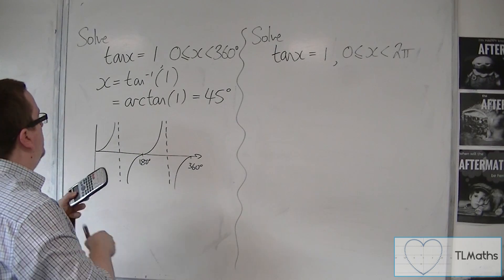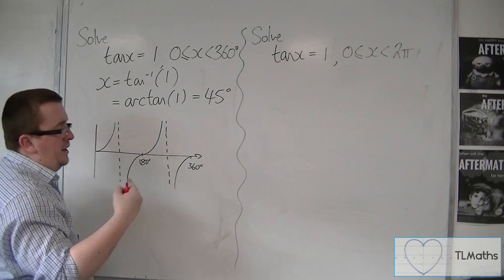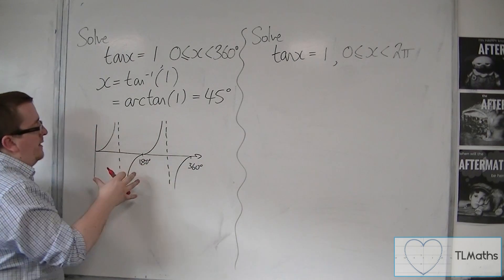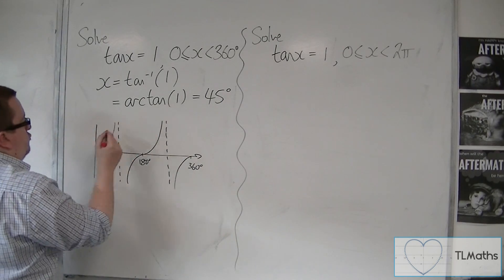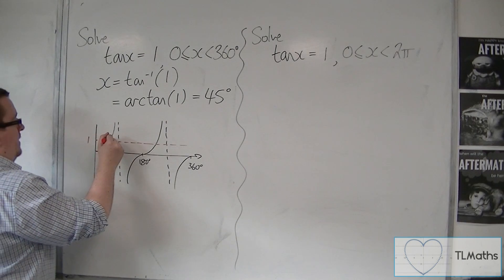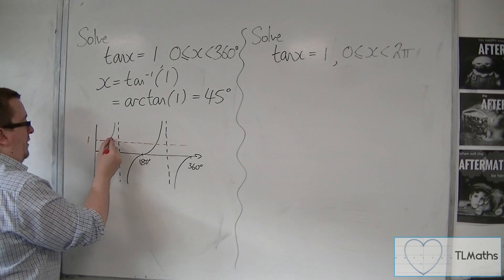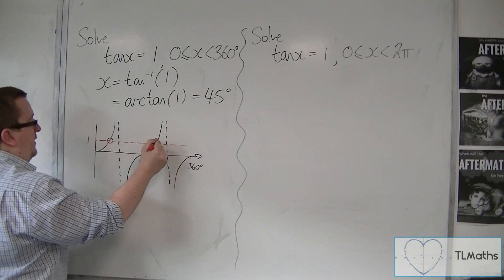So then we can draw in the line one. Now unlike sine and cosine, tan doesn't have a minimum or a maximum, so it doesn't really matter where I draw one. I can draw it there if I like. So that's one. So I can see that I'm getting one solution from cutting the curve there, and one solution from cutting the curve there.